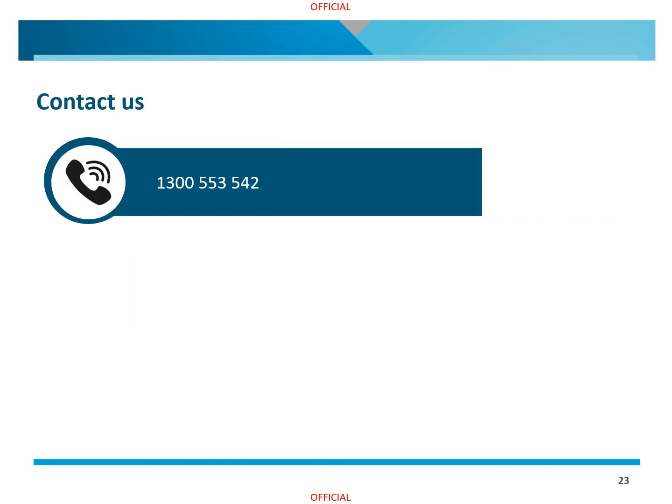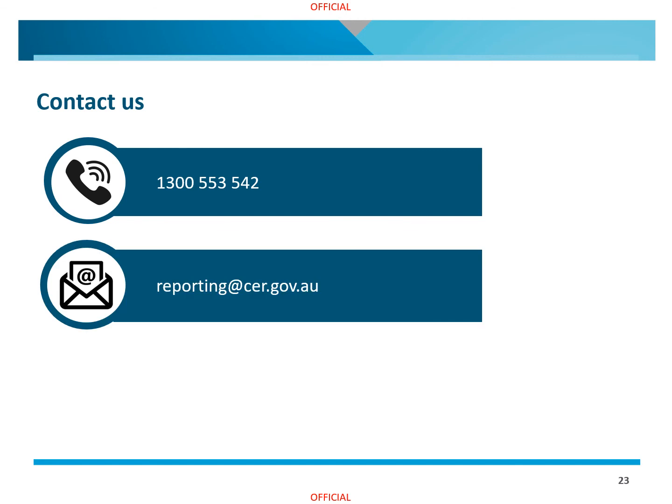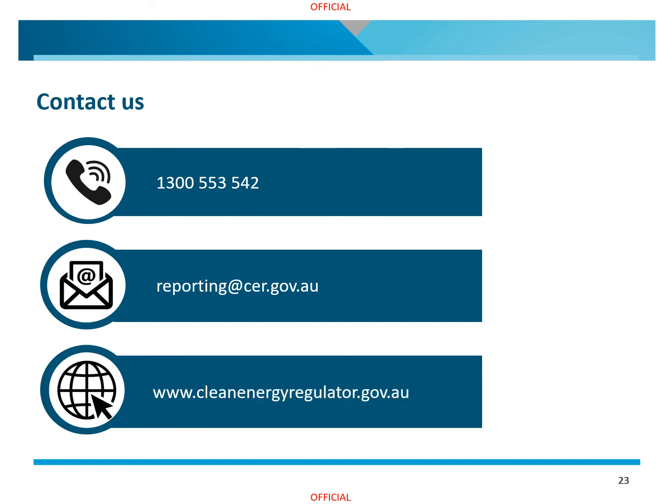For more information or help with reporting under the ENGA scheme, please contact us by calling 1300 553 542, emailing us at reporting@cer.gov.au, or visiting our website at www.cleanenergyregulator.gov.au.